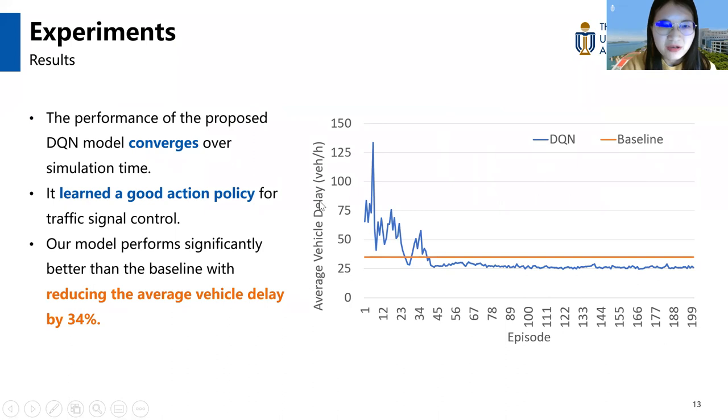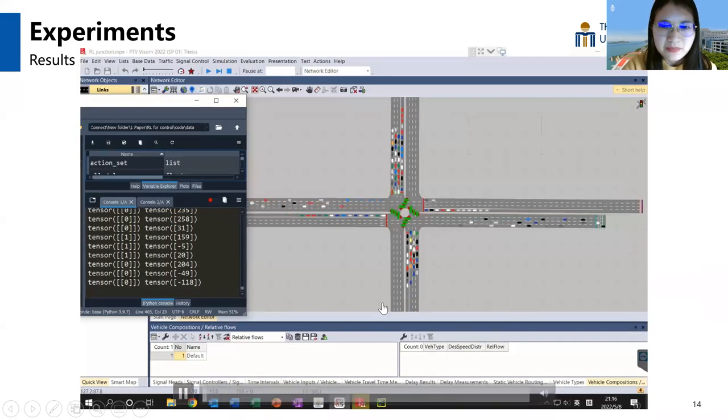In the results, the average vehicle delay obtained from VISSIM is used to evaluate the performance of the DQN and the baseline. The performance of the proposed DQN model converges over time, and it learned a good action policy for control. Our model performs significantly better than the baseline by reducing the average vehicle delay by 34%. This is the video about the training process, and we use Python to code the DQN and control the VISSIM. The signal is controlled, and we can see that the vehicles pass through the intersections and the green time isn't wasted.